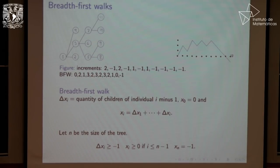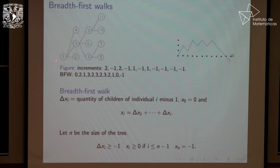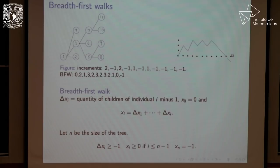Now that we have the tree with these labels, I'm going to define the breadth-first walk through its increments. We let delta x of i be the quantity of children of individual i minus one — you'll see the minus one appear in a bit. We also define x of zero equal to zero, and x of i is the sum of increments delta x1 up to delta xi. In this tree, delta x1 equals two, delta x2 is minus one, delta x3 is two, delta x4 is minus one, etc. The breadth-first walk is obtained by starting at zero and summing up these values, giving this wiggly function.